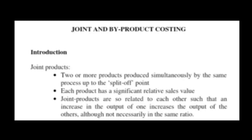Joint product means two or more products produced simultaneously by the same process up to the split-off point. Each product has a significant relative sales value — each joint product is not necessarily sold at the same value. Joint products are so related to each other that the increase in the output of one increases the output of another, although not necessarily in the same ratio.